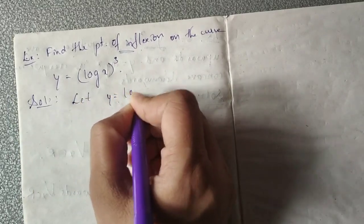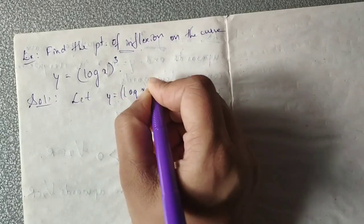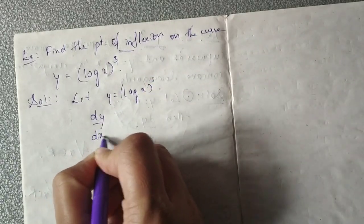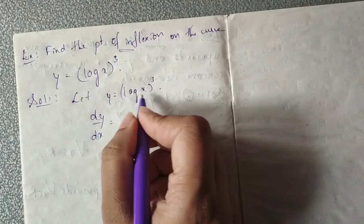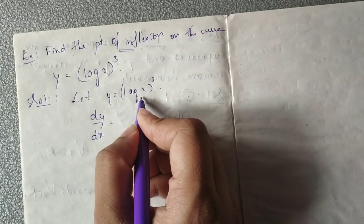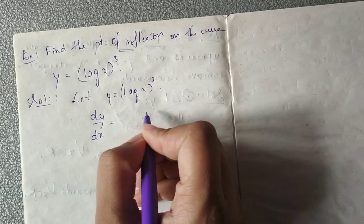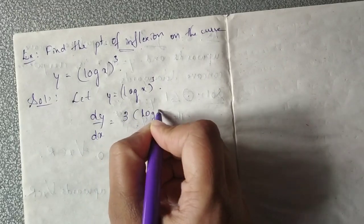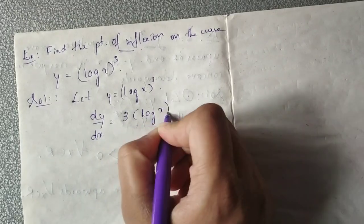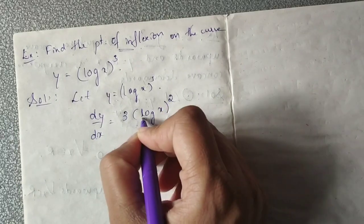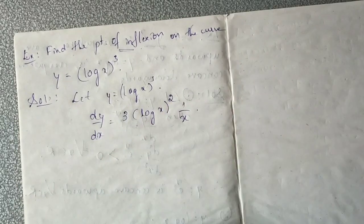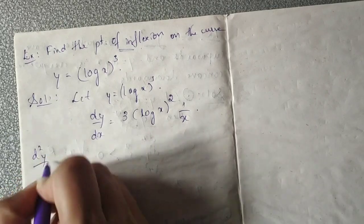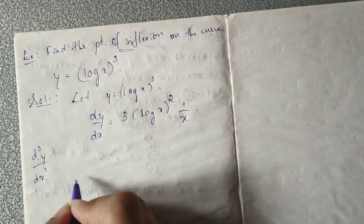Let y equal to log x, the whole cube. The first derivative dy by dx is in the form x raised to n: n into x raised to n minus 1. This gives 3 into log x raised to 2, times the derivative of log x which is 1 by x, applying the chain rule. Then we need the second derivative d squared y by dx squared.